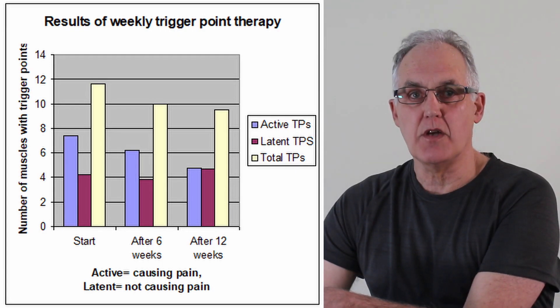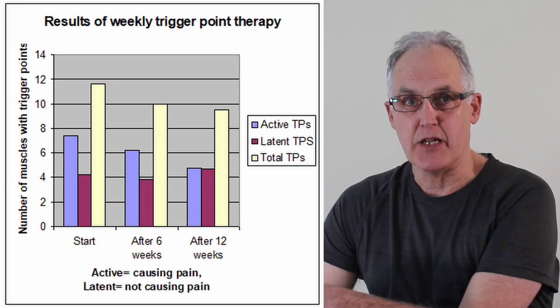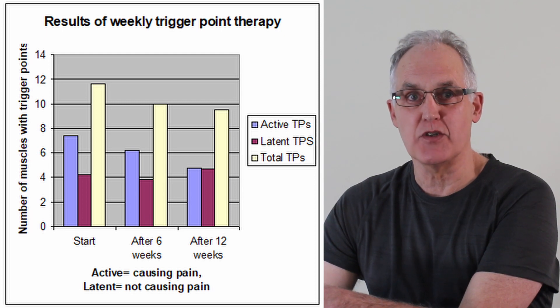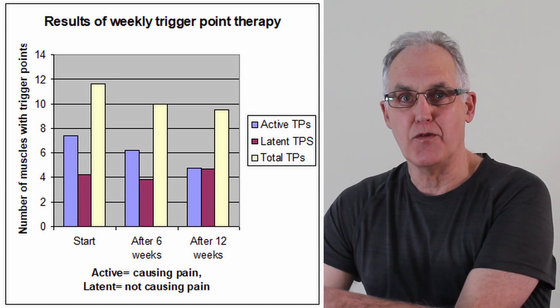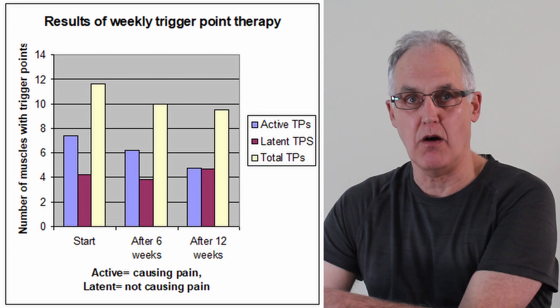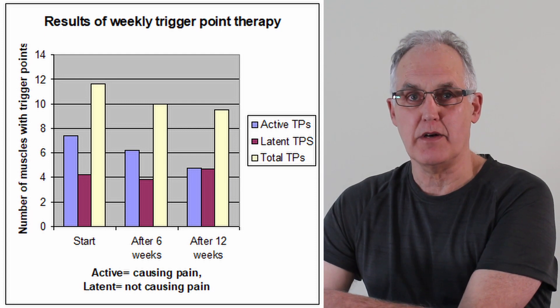The first is the results of one of the very rare trials that did check whether the trigger points actually go. The trigger point therapy they used was probably as good as it gets. The researchers are top PhD scientists on trigger points and they use 45-minute sessions every week just on the shoulders, which is much more than you get from a typical professional consultation. So let's look at how they did.